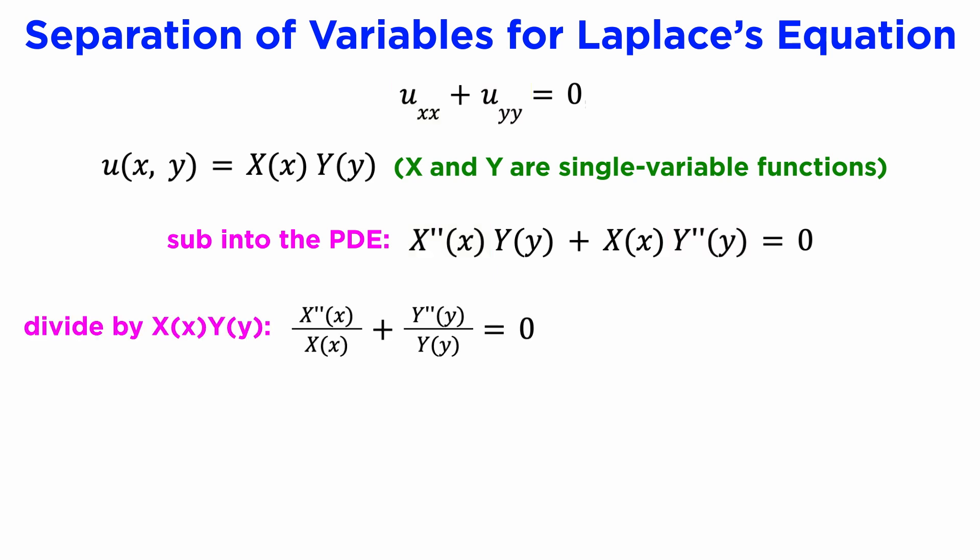We can divide both sides by the product of our functions x, y, and move one term to the other side. We get x double prime of x divided by x of x equals negative y double prime of y divided by y of y.